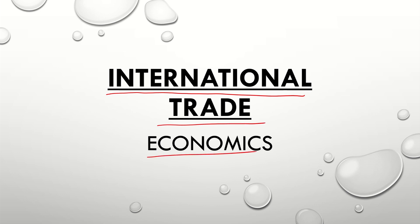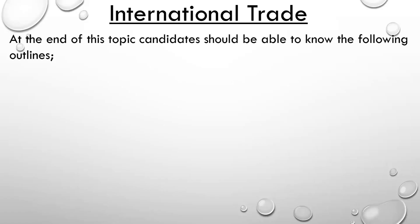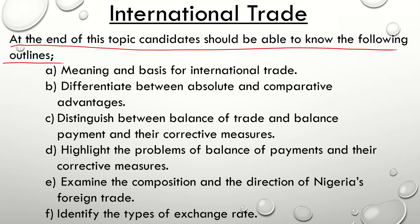We'll be looking at what students are expected to know in this particular topic. At the end of this topic, candidates should be able to know the following outlines. Number one, candidates should be able to know the meaning and basis of international trade. Number two, candidates should be able to differentiate between absolute and comparative advantages. Candidates should also be able to distinguish between balance of trade and balance of payment and their corrective measures.